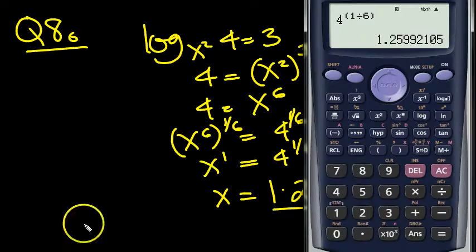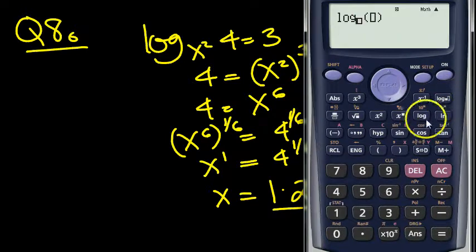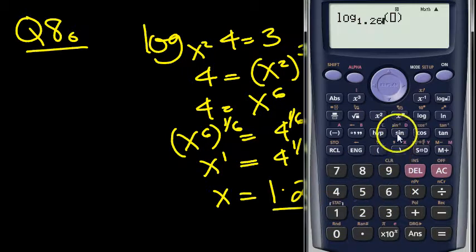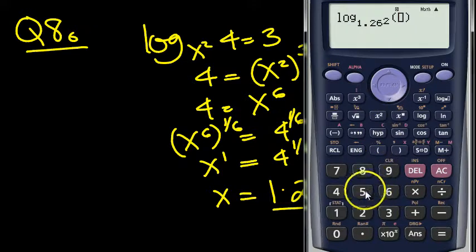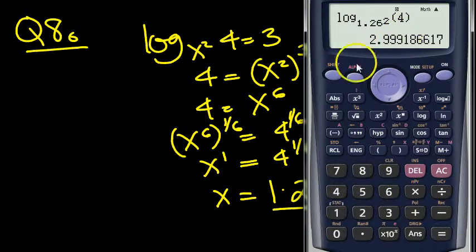So we can check that, can't we? Because we've got log, and I'm going to put in here 1.26 squared of the number 4. And we get a number that's almost 3. So that's fine.